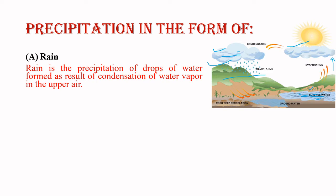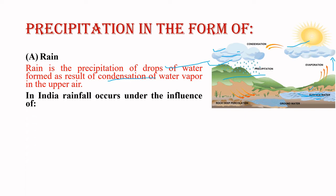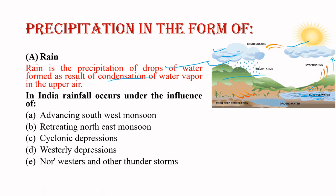Rain is the precipitation of drops of water formed as a result of the condensation of water vapour in the upper air. In India, rainfall occurs under the influence of: the advancing southwest monsoon, retreating northeast monsoon, cyclonic depressions, westerly depressions, and norwesters and other thunderstorms. In this lecture, we will be studying all of these in detail.